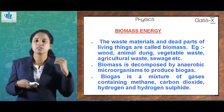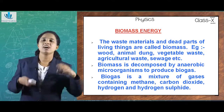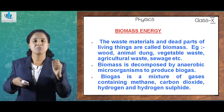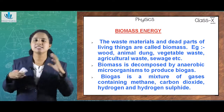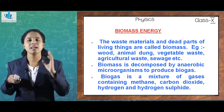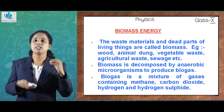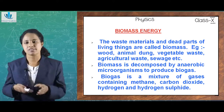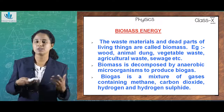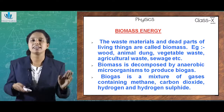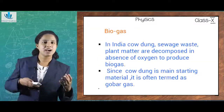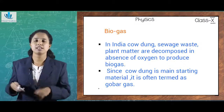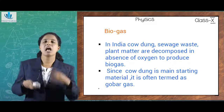The main factor in biomass energy production is anaerobic microorganisms. Anaerobic bacteria play a crucial role in producing biomass energy. Biomass is decomposed by anaerobic bacteria to produce biogas, which is a mixture of different gases like methane, carbon dioxide, hydrogen sulfide, hydrogen, etc. In India, sewage waste, cow dung, plant matter, etc. are decomposed in the absence of oxygen to produce biogas.